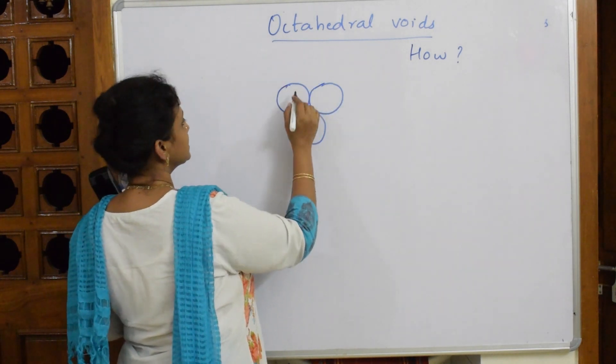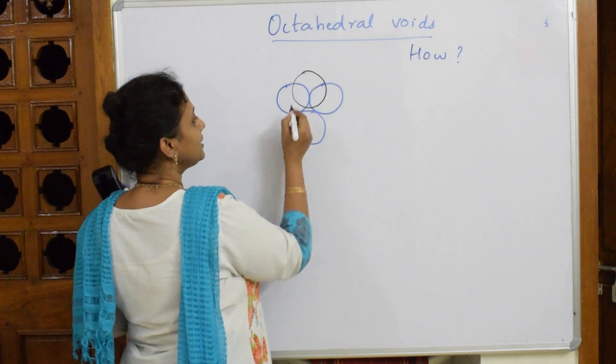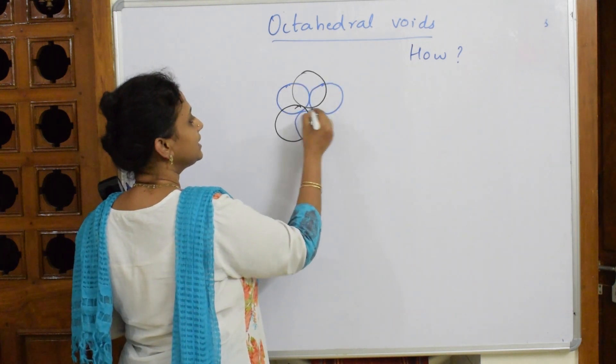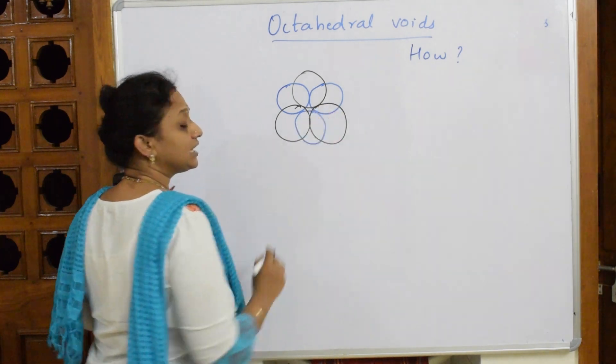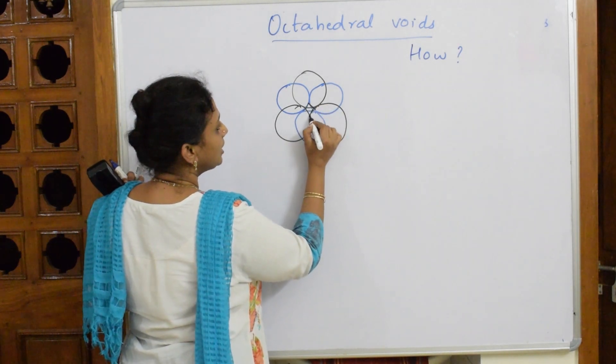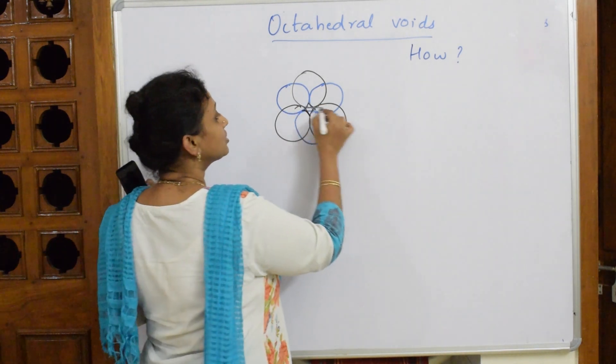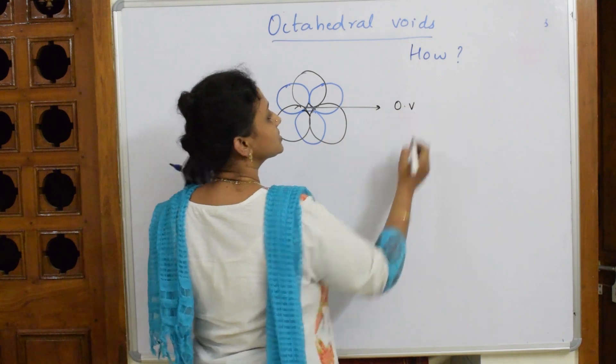Just observe here - I've started with two, now I'm going to start with one. I'm going to start with the second layer, then the third layer. Now observe carefully what you're getting - you're getting an octahedral shaped void in between the center. This octahedral shaped void is called the octahedral void.